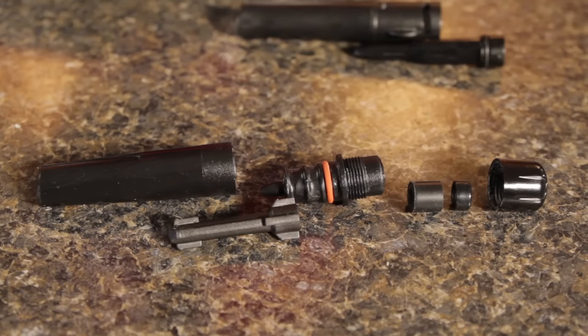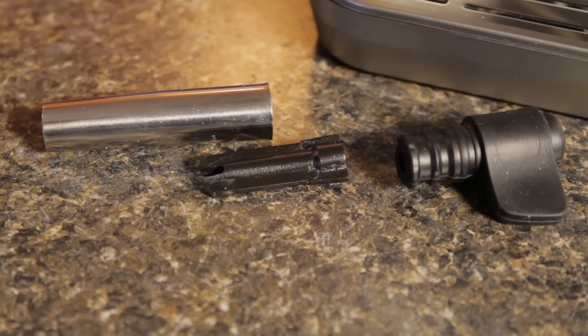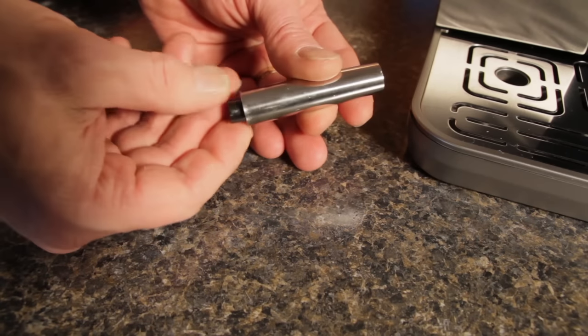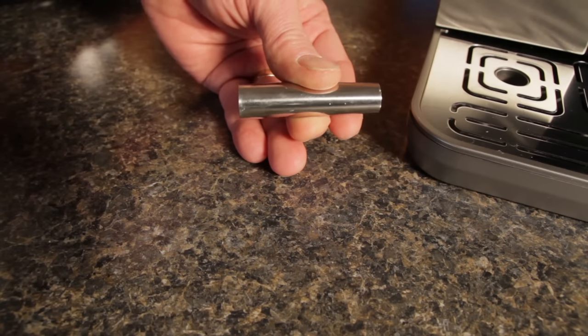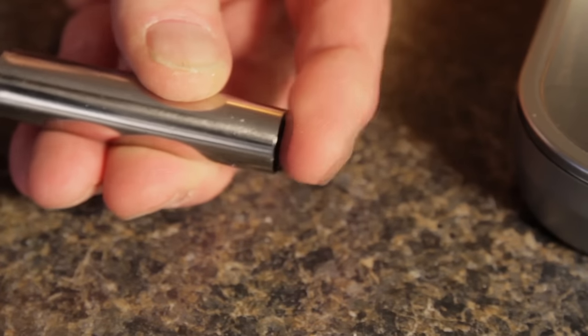Many wands have internal components that can be separated for cleaning. When reassembled, be sure all parts are fully seated. A common issue with some wands is not fully seating the internal sleeve. You can use a pen or something similar to push it in so it looks like this when put together.